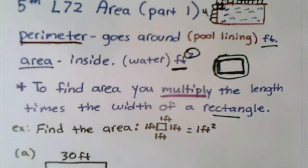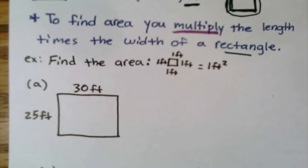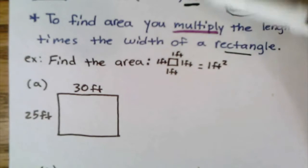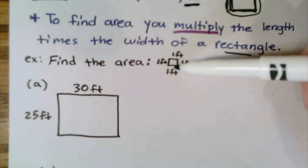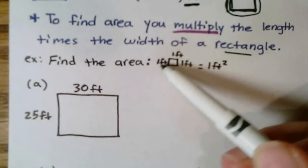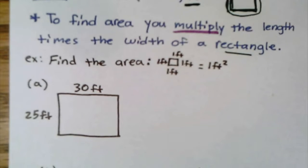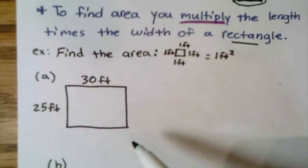It's easy to find these. It says 'find the area.' I drew this to show you that one foot times one foot—the perimeter would be four feet, but one times one would be one foot squared. In Example A, we have a 30-foot length and a 25-foot width. How do I find this?